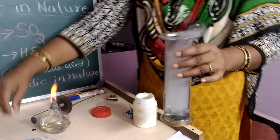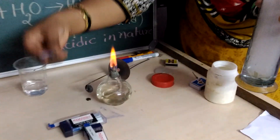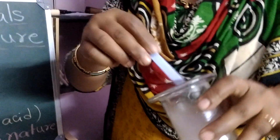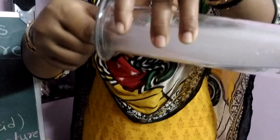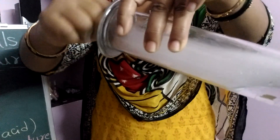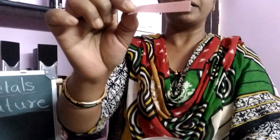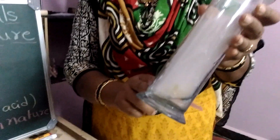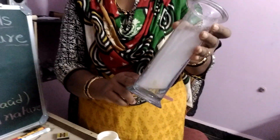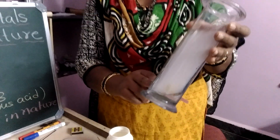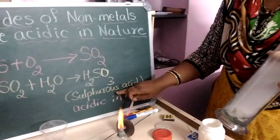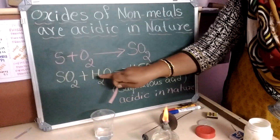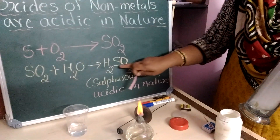Okay, let us take the blue litmus paper and test it. You can see the blue litmus has turned red in color, which indicates that when sulfur dioxide is dissolved in water, it is forming an acid, which we know as sulfurous acid.